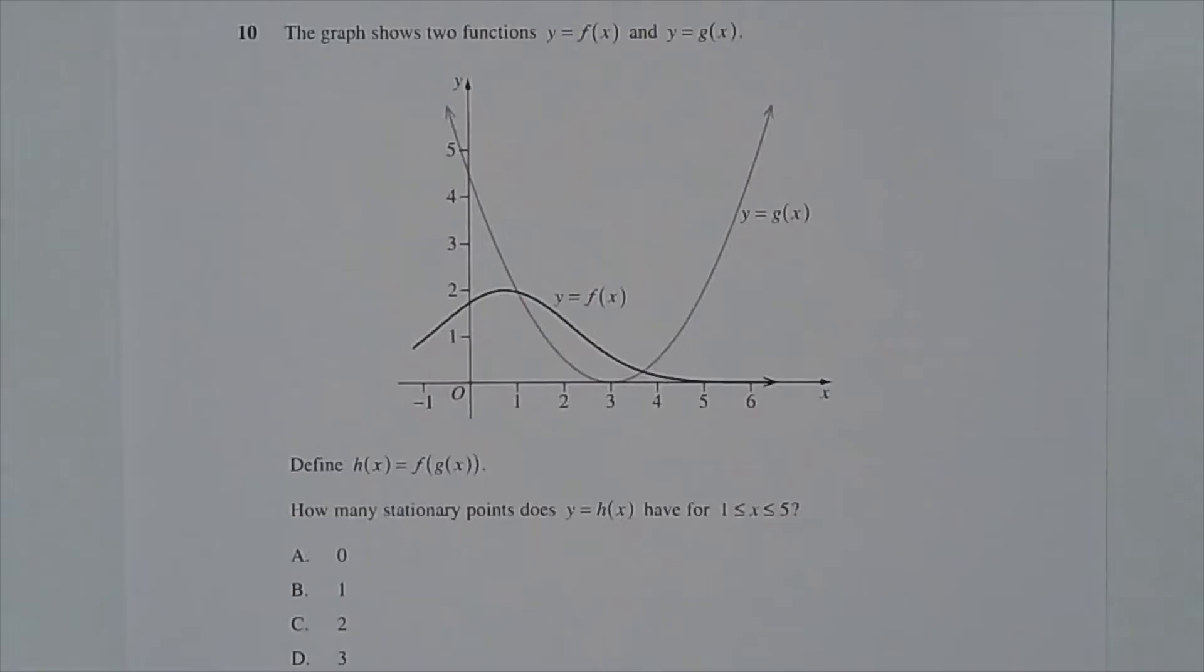Question 10. The graph shows two functions, y equals f of x and y equals g of x. Define h of x equals f of g of x. How many stationary points does y equal h of x have for x greater than or equal to 1 and less than or equal to 5?